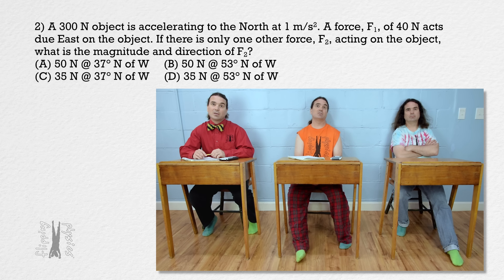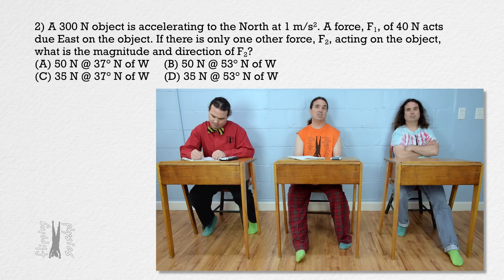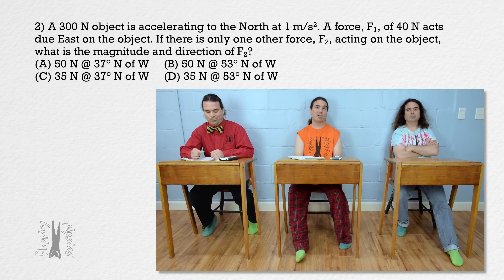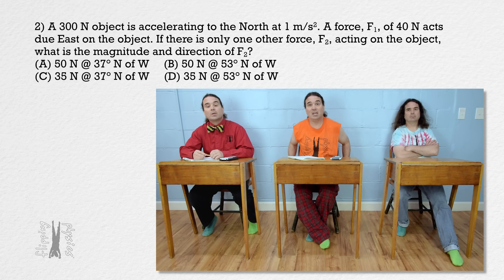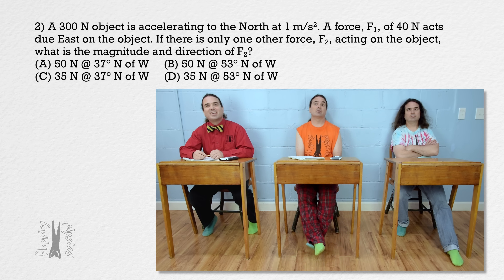Choice A is 50 newtons at an angle of 37 degrees north of west. Choice B is 50 newtons at an angle of 53 degrees north of west. Choice C is 35 newtons at an angle of 37 degrees north of west. Choice D is 35 newtons at an angle of 53 degrees north of west.